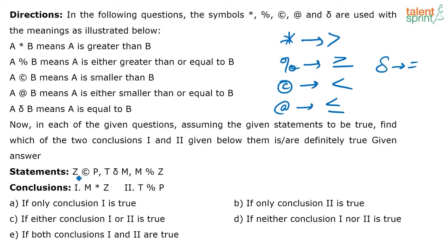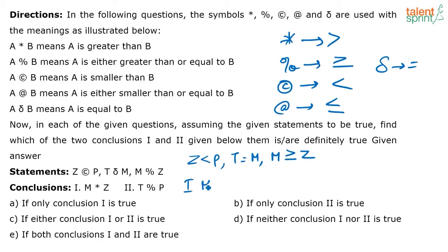At represents smaller than or equal to, and this symbol represents equal to. Now what is the given statement here? Z is less than P — I'm just taking these symbols and writing them down. T equals M. M is greater than or equal to Z. Now what is the first conclusion? The first conclusion says M is greater than Z. The second conclusion says T is greater than or equal to P.